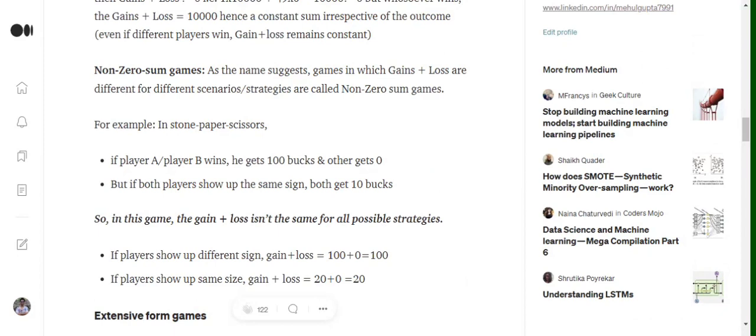Now in case of a non-zero-sum game, it is observed that for different conditions, the gains plus loss is equal to different values, and eventually it's not equal to some constant. For example, in case of Stone Paper Scissors,